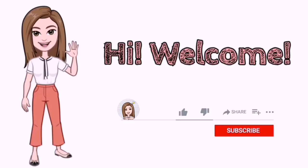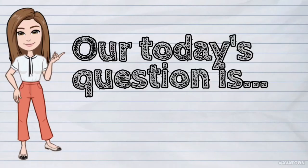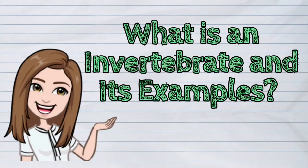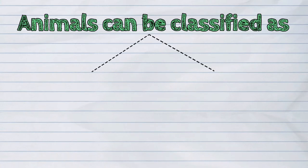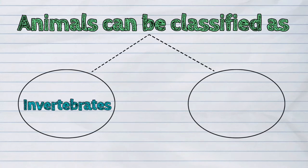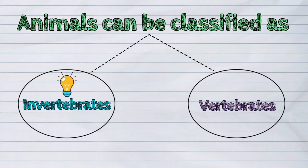Hi! Welcome to iQuestionPH. Our today's question is: What is an invertebrate and its examples? Animals can be classified as invertebrates and vertebrates, but today we will talk about the invertebrates.